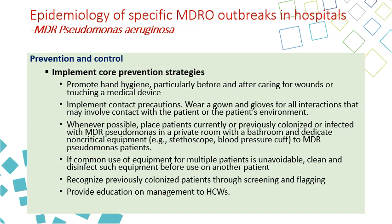Prevention includes contact transmission precautions plus prevention of waterborne outbreaks. For contact transmission: promote hand hygiene, implement contact isolation or precautions whenever possible, place the patient in a single room with a private bathroom, and use dedicated non-critical equipment. If common-use equipment is unavoidable, clean and disinfect between patients, recognize previously colonized patients and flag them in the system, and provide education for healthcare workers.